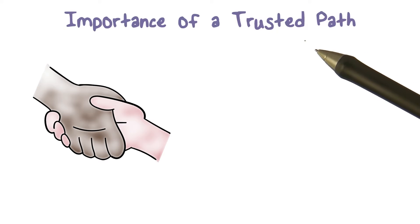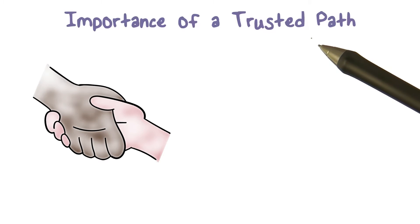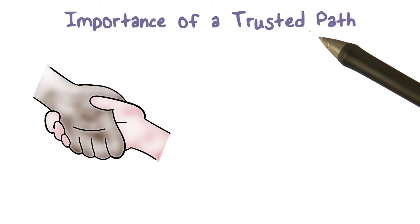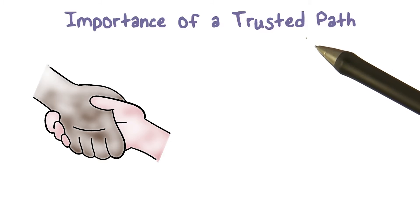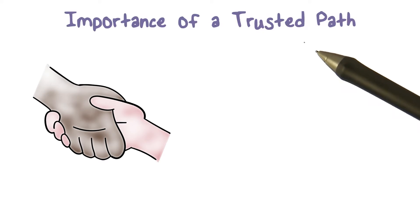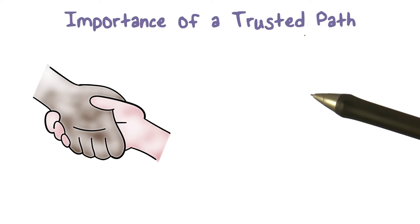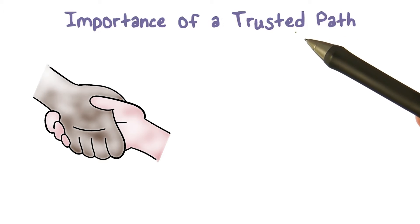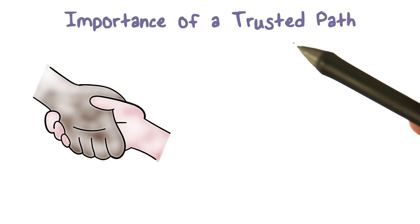A trusted path means that you're really talking to the trusted computing base, or the operating system. It's a path that connects you typing the keys and where these keystrokes are being captured, connecting you and the trusted computing base, with no one else in between. If that is the case, you have a trusted path.